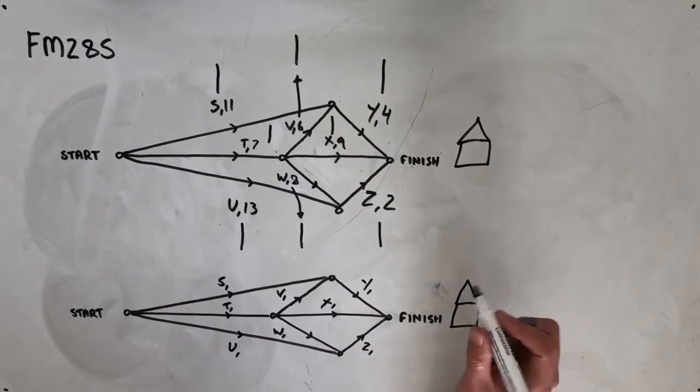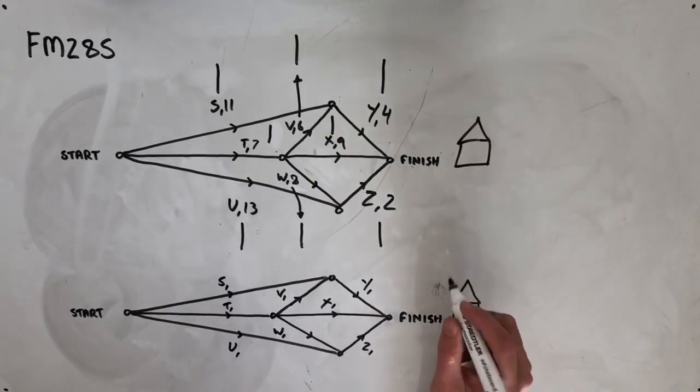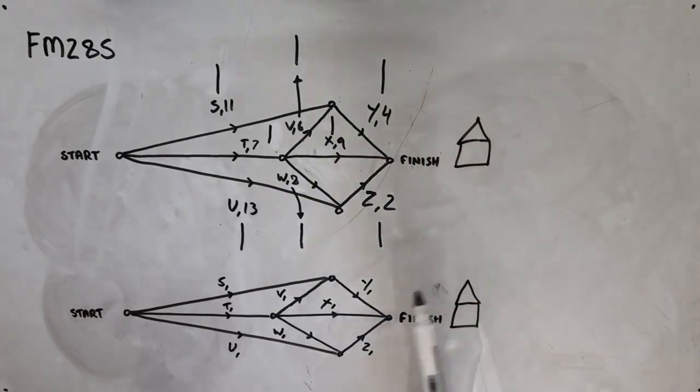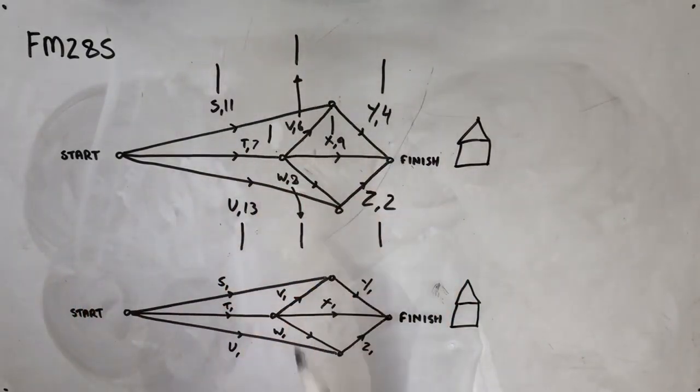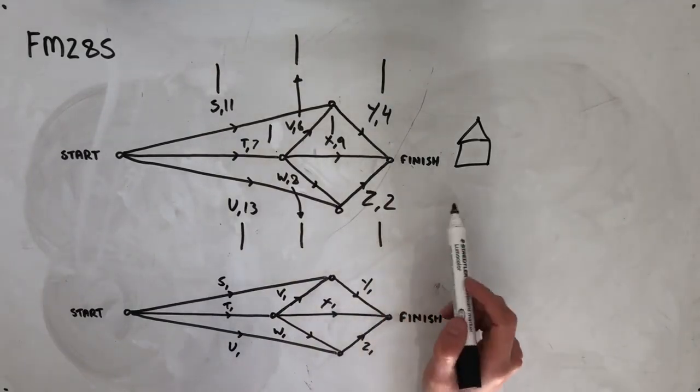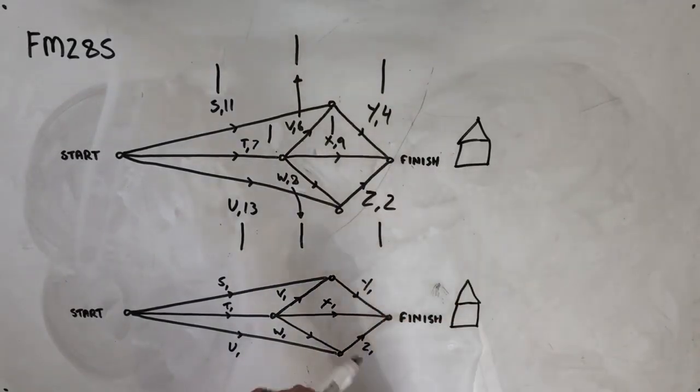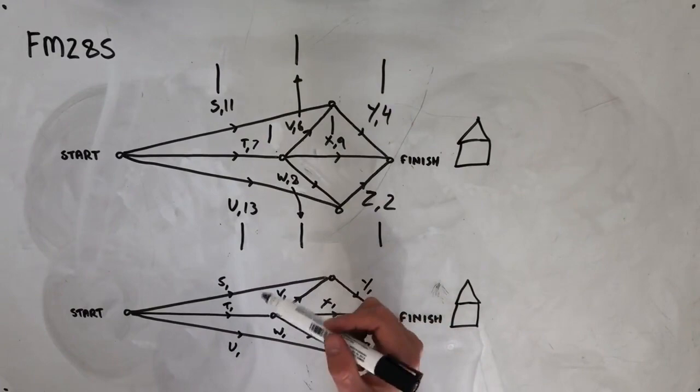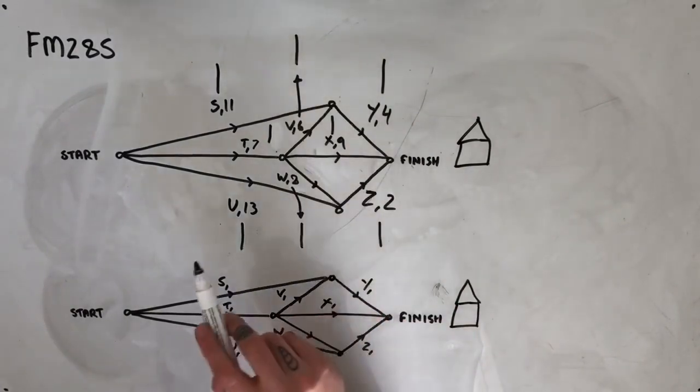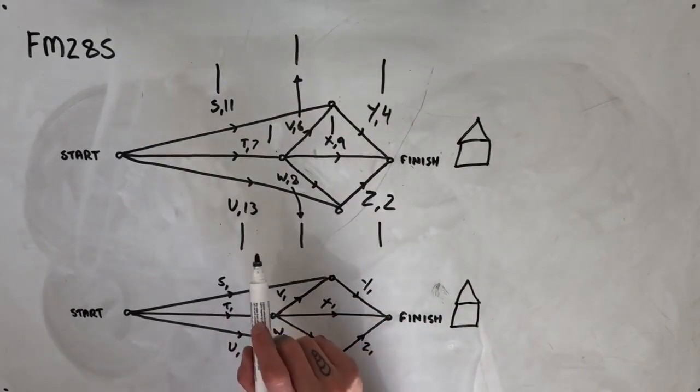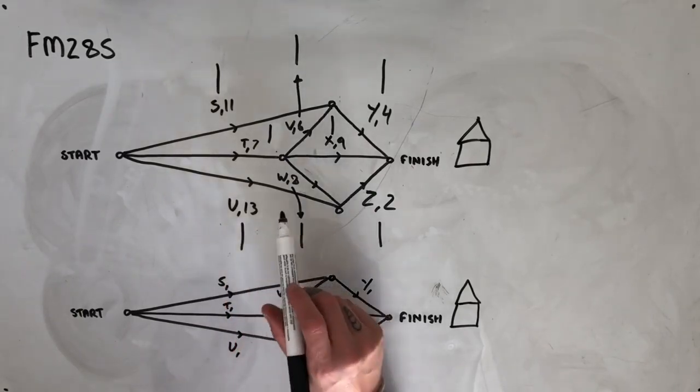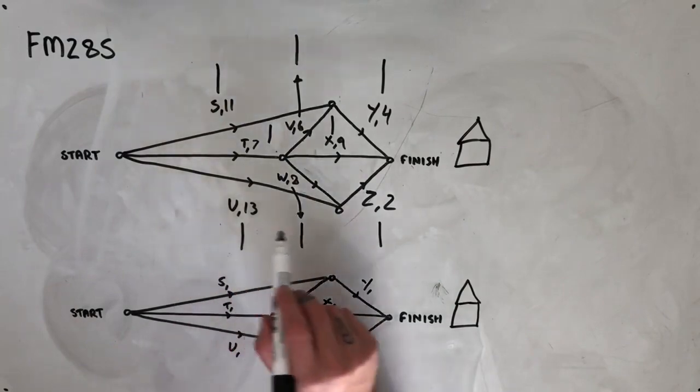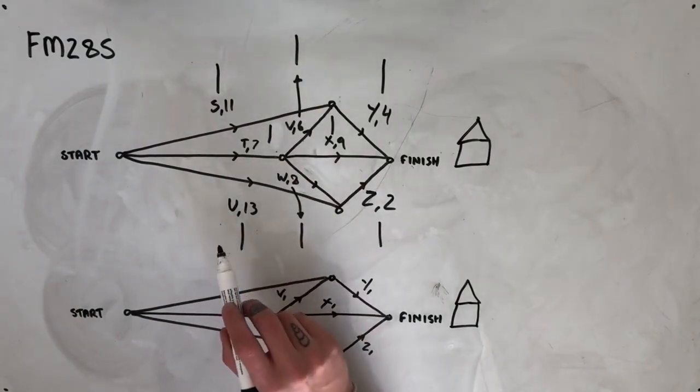Hey guys, welcome to question FM 285 of the Further Maths Fortify Study Guide. This question starts off with giving us this diagram minus some of these little marks that I've put in here for our earliest and latest starting times, which we'll do in a second. The information we're given says eight activities S, T, U, V, W, X, Y, and Z must be completed for a project. The graph above shows these activities and their usual duration in days.